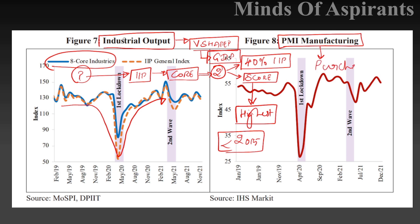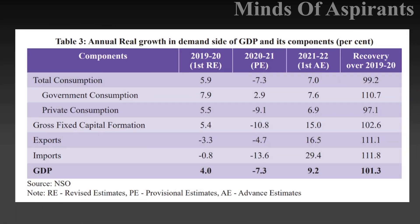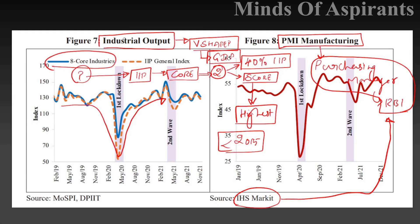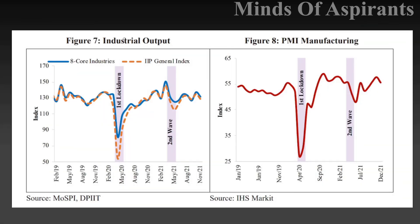What is the Purchasing Manager Index? Whether it is released by RBI — look at this: what is IHS Markit? I want you to look at what IHS Markit is and analyze it. As I told you, industries have seen a V-shaped recovery. The wider perspective requires you to talk about GDP, industrial production, and its components.